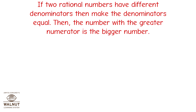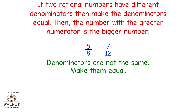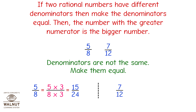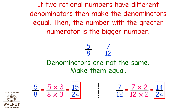If 2 rational numbers have different denominators, then make the denominators equal. Then the number with the greater numerator is the bigger number. For example, 5 upon 8 and 7 upon 12 — denominators are not the same, so make them equal. 5 upon 8 equals 15 upon 24. 7 upon 12 equals 14 upon 24. Now we get the same denominator, so 5 upon 8 is greater than 7 upon 12.